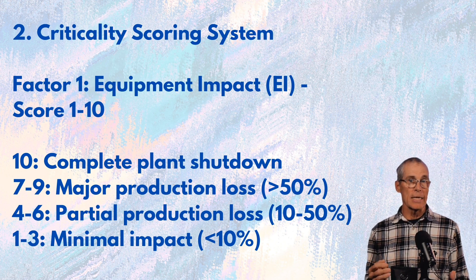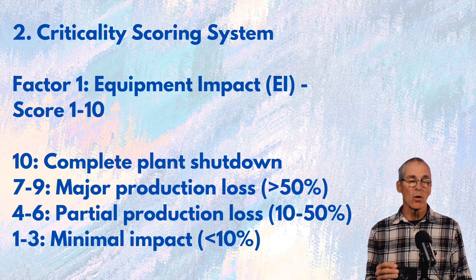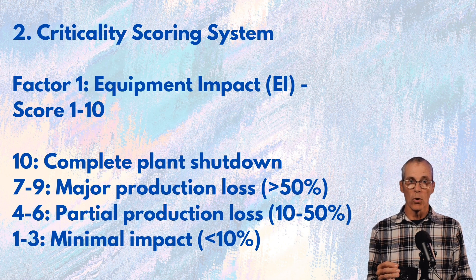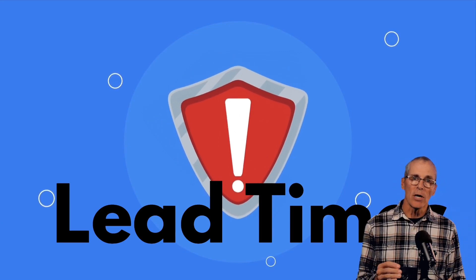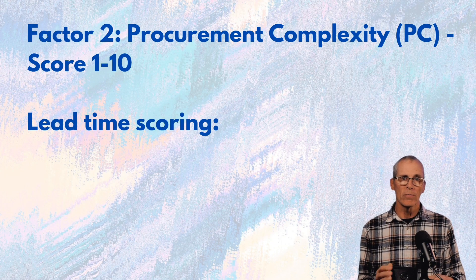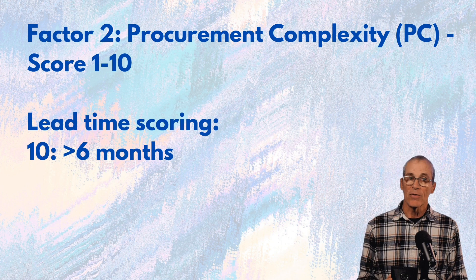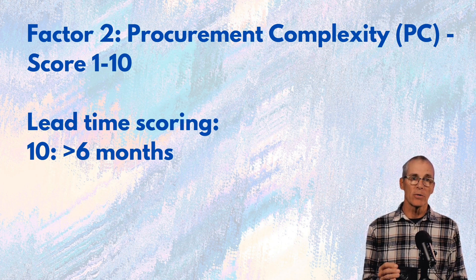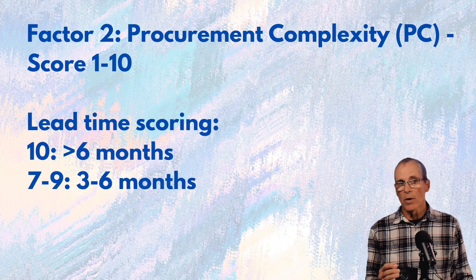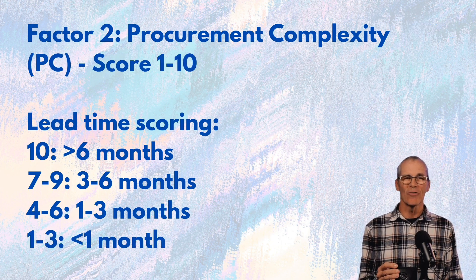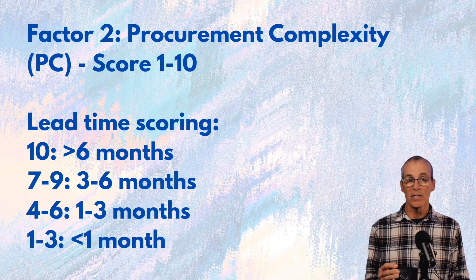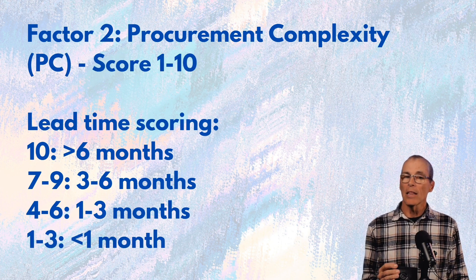Some folks might say if there's any production loss at all, we're going to give it more than a one to three. Now let's look at lead times. If it takes longer than six months, give it a ten — that's a long time to be shut down. Three to six months, score it seven to nine. One to three months, score it four to six.